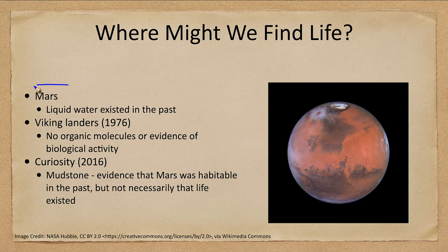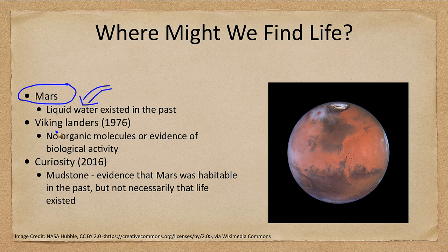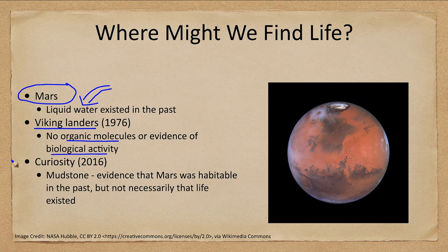One of the most prominent places we've always considered is the planet Mars. Why? Because we know that liquid water existed there in the past. It is the one other place in the solar system that we know of that actually had liquid water on its surface. We've explored it regularly, and the Viking Landers in 1976 showed no organic molecules or any evidence of biological activity, but could not completely rule it out.